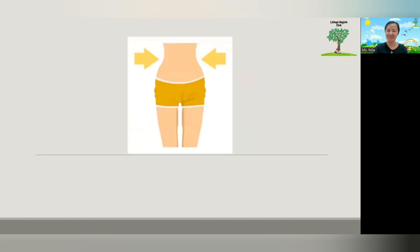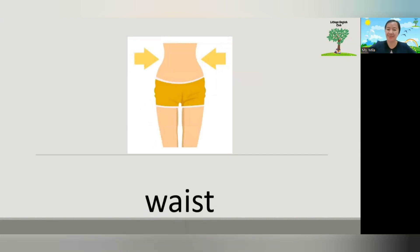And how about this? Can you touch it? Oh, I can touch mine. What is it? Yes, waist. What is this? Waist. Waist means pinggang. What is it? Pinggang. Waist means pinggang. In Indonesian, we call it pinggang.